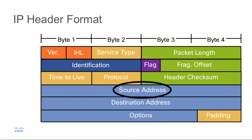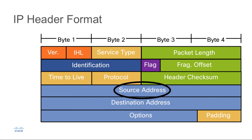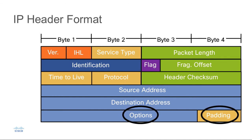The two fields that follow are important: the source IP address, which is the 32-bit identifier of the sender, followed by the destination IP address, which is the 32-bit IP address of the recipient. In standard IP routing, routers reference the destination address field. In source-based routing, routers would reference the source address field.